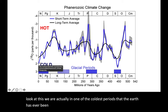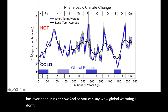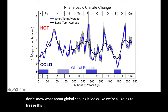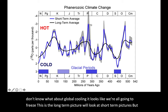You might say, well, global warming — what about global cooling? It looks like we're all going to freeze. This is the long-term picture; we'll look at shorter-term pictures. But yeah, the Earth has been much hotter. For example, this is the Permian.